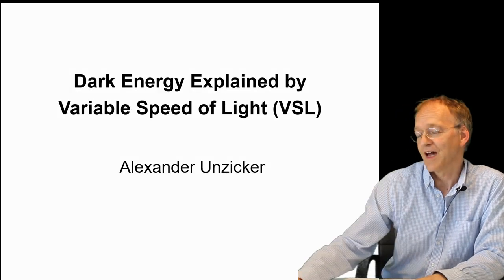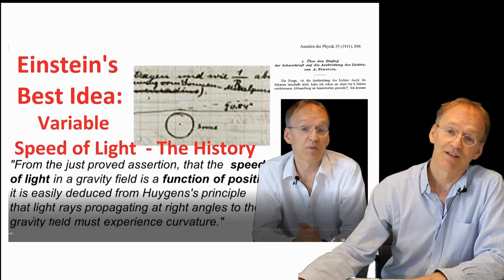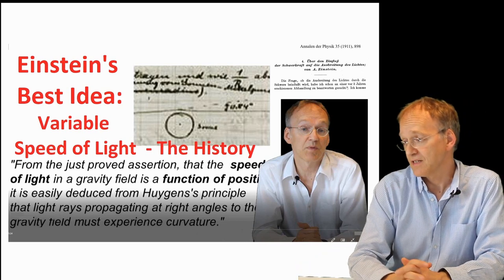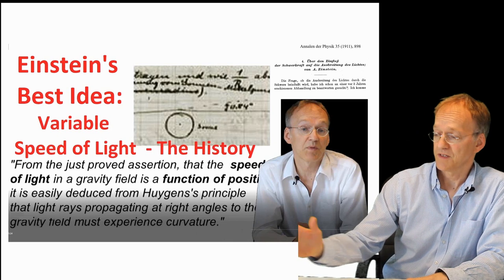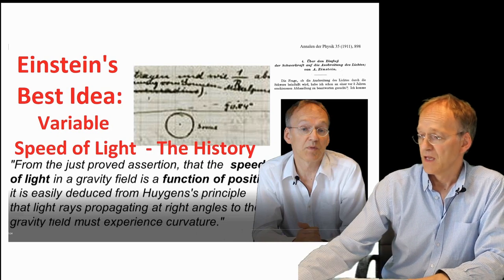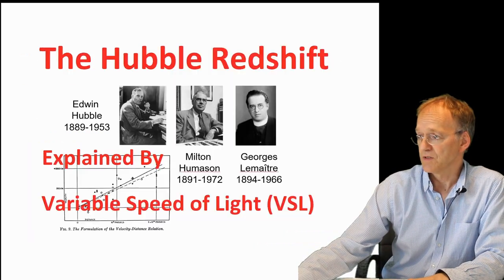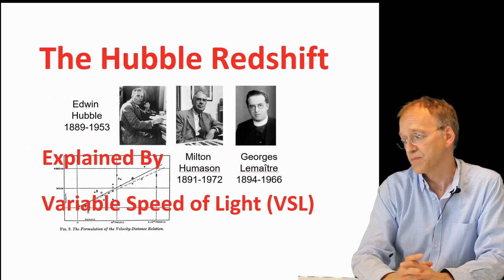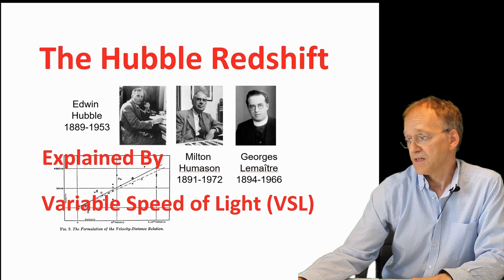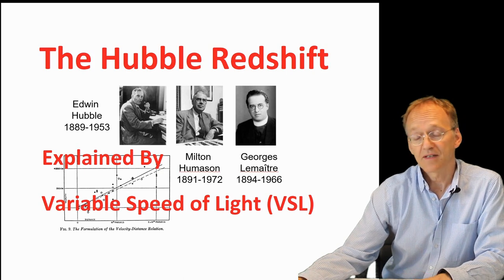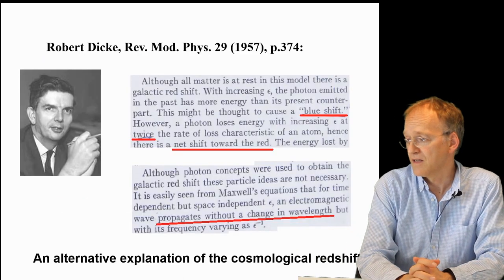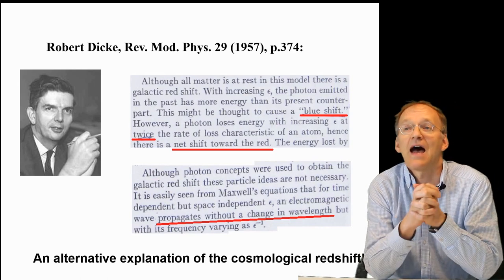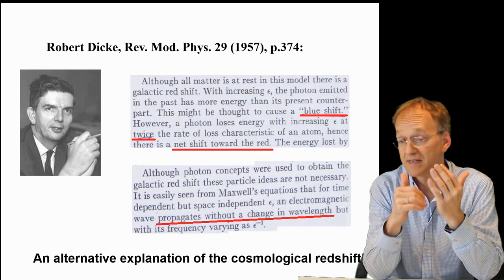Variable speed of light was Einstein's very first idea when he thought about general relativity in 1907 and 1911. You might watch this history video, and it's also useful if you watch the Hubble redshift video and the variable speed of light video, because Robert Dickey provided an alternative explanation of this redshift, and the entire discussion is based on that.